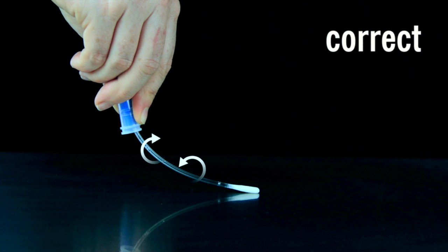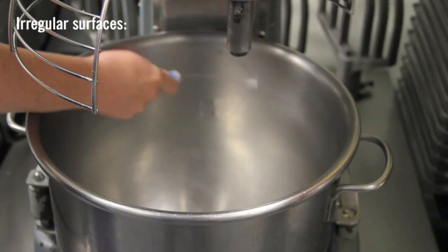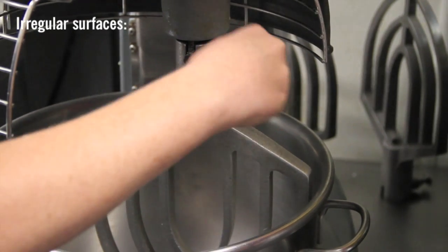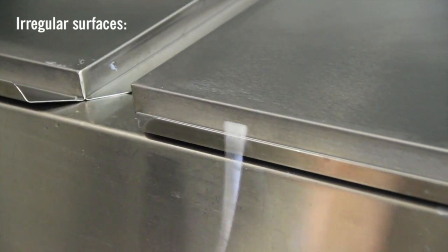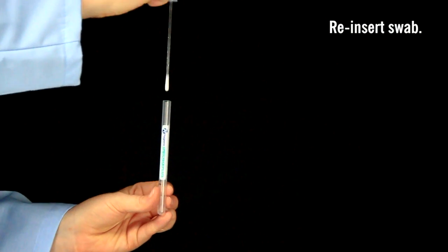Rotate the swab tip while collecting sample to ensure maximum sample collection. When swabbing an irregular surface, ensure the swabbing technique remains consistent and swab a large enough area to collect a representative sample. Replace the swab in the tube.